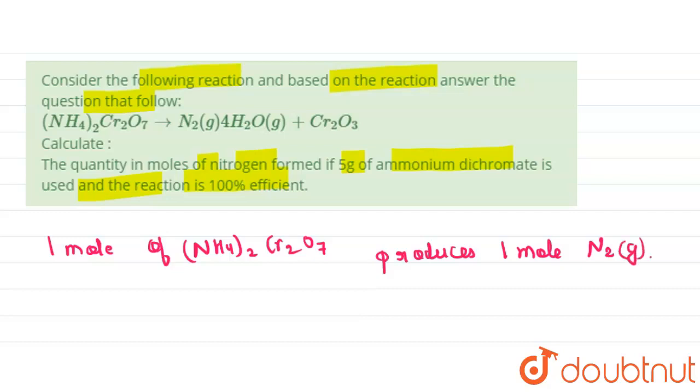...so we can use stoichiometric method to analyze the moles of the reactant and product formed. Okay, so one mole of ammonium dichromate can be decomposed to form one mole of nitrogen.